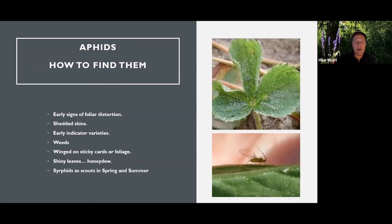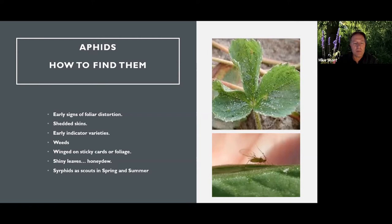If weeds get big and you remove them when they have pests, you can disturb the pest into the crop — not necessarily with aphids, but definitely with thrips. If you're seeing winged aphids on sticky cards or the foliage, they're produced at different life stages of each aphid species. Keep in mind that if you find winged foxglove aphids on your cards, it may mean the infestation is already well advanced in your crop.